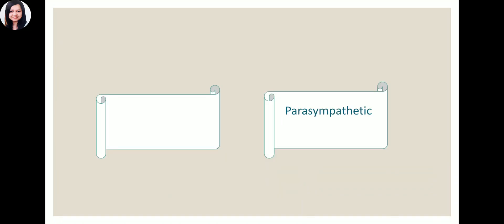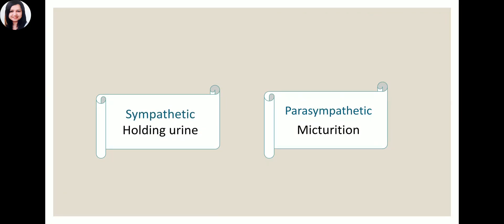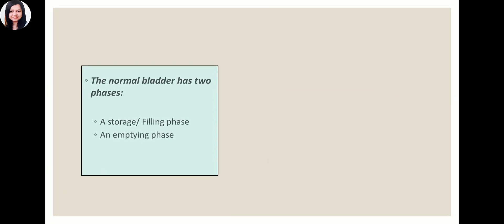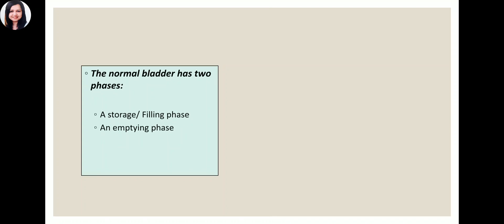Parasympathetic activity means voiding or micturition, while sympathetic activity is for holding or the filling phase. Mechanically, the normal bladder has two phases: a storage or filling phase and an emptying phase. Storage and filling require sympathetic activation; emptying requires parasympathetic activation.